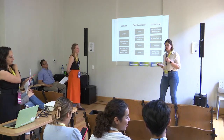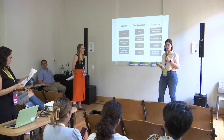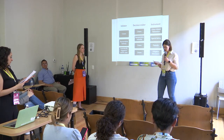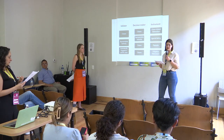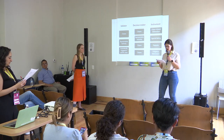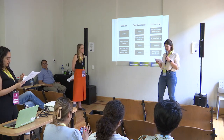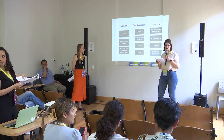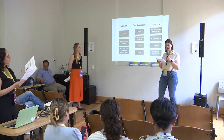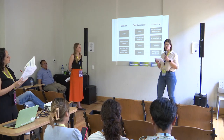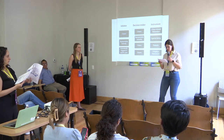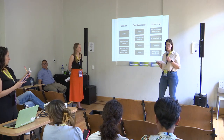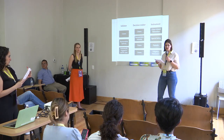Going on to how we measure the quality of direct democracy: the first criterion is whether there are clear legal regulations — if it's fixed in the constitution or in law, what kind of quorum needs to be met, is there a deadline, what topics can be dealt with, what are the requirements for collecting signatures, and what question can be asked.